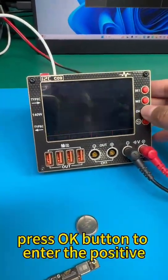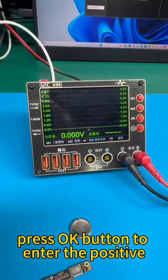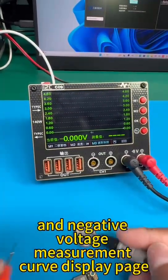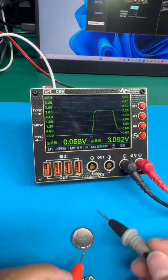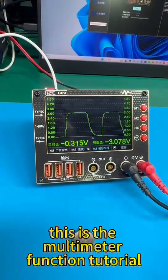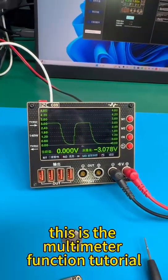Press OK button to enter the positive and negative voltage measurement curve display page. This is the multimeter function tutorial.